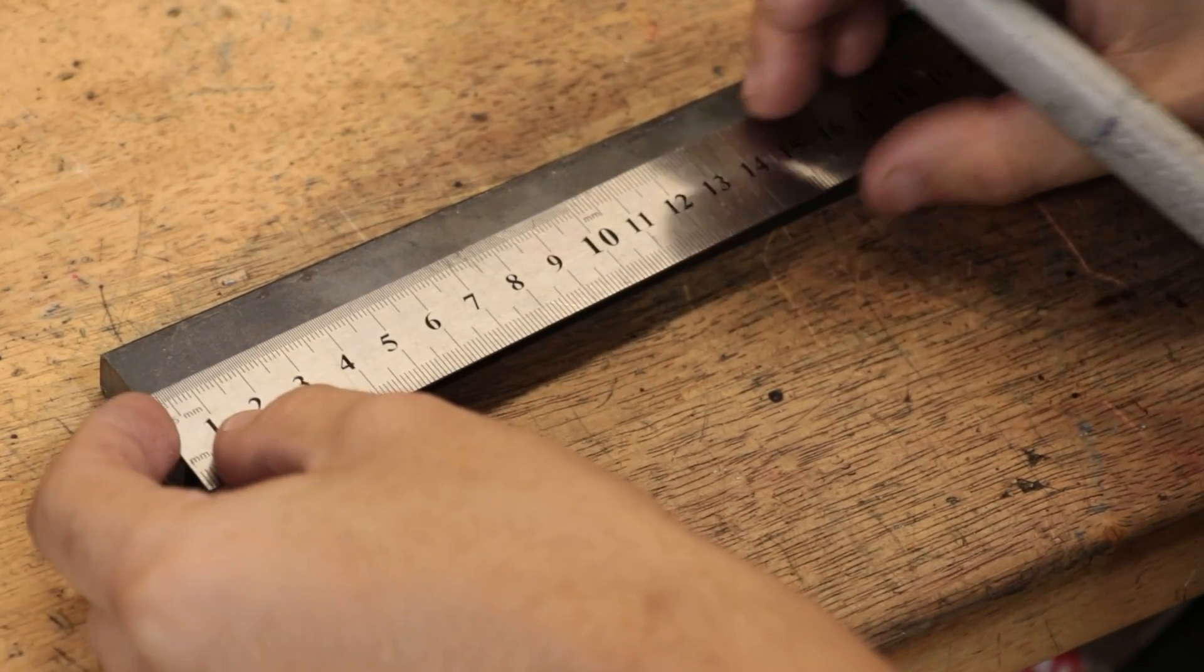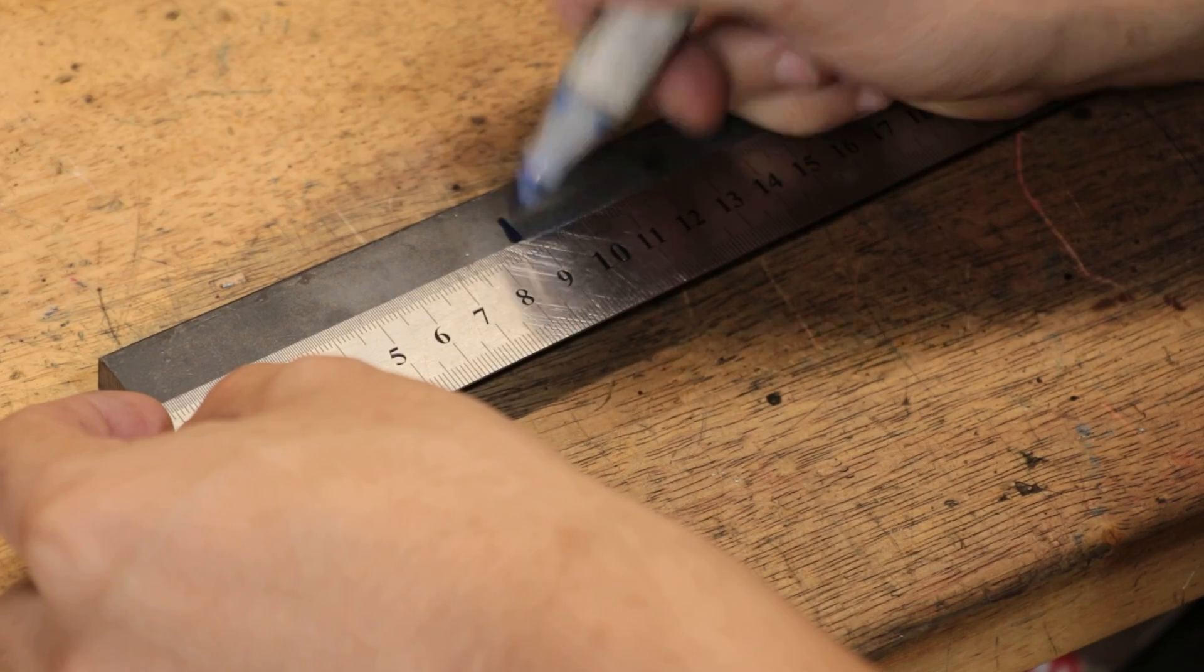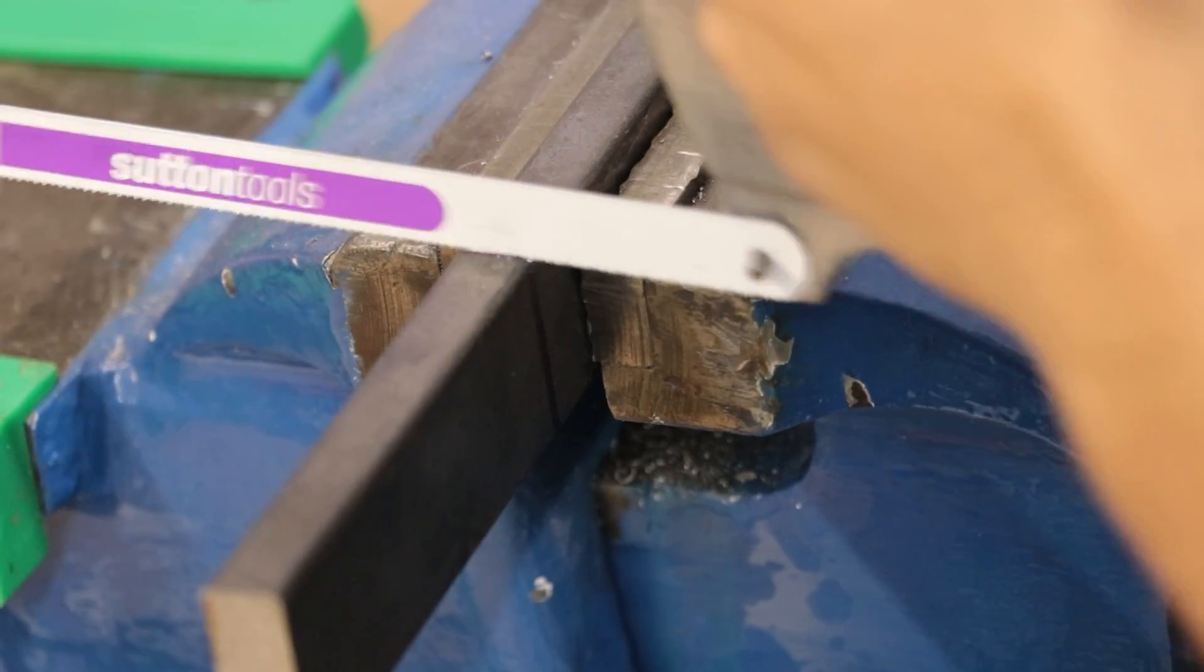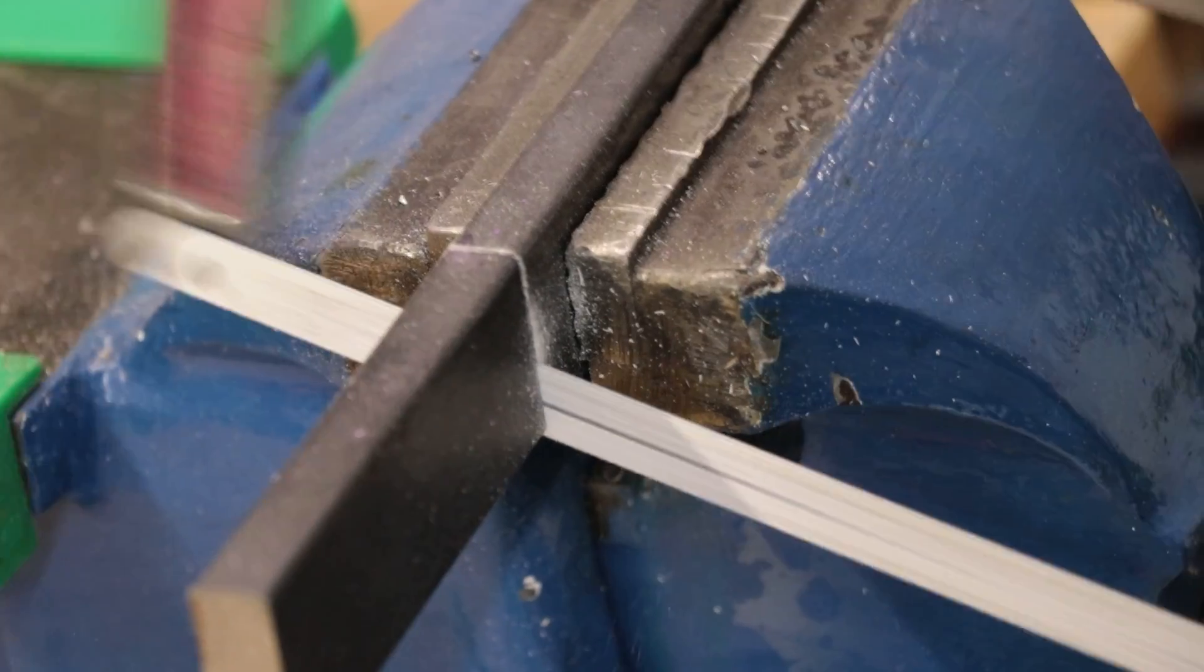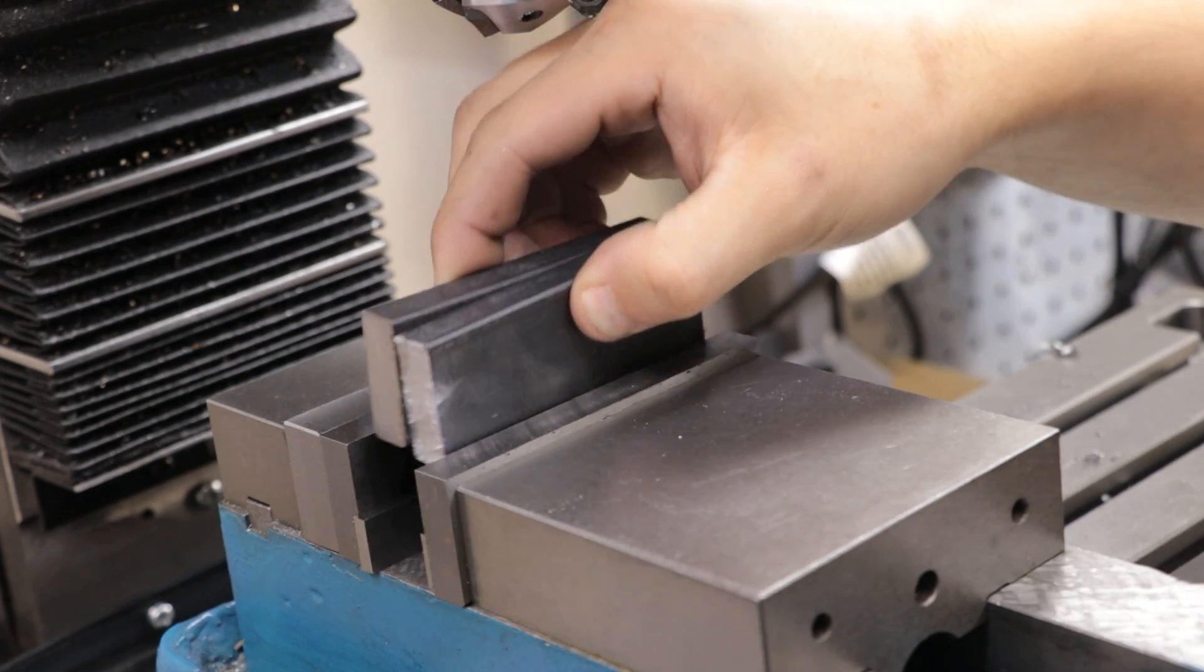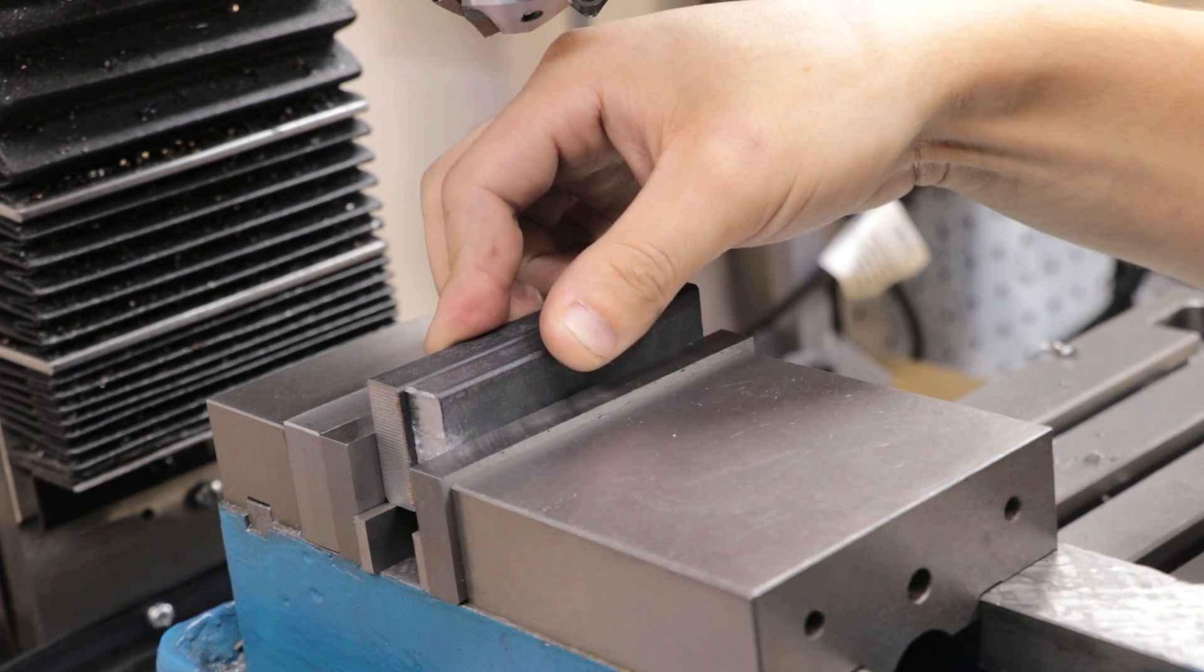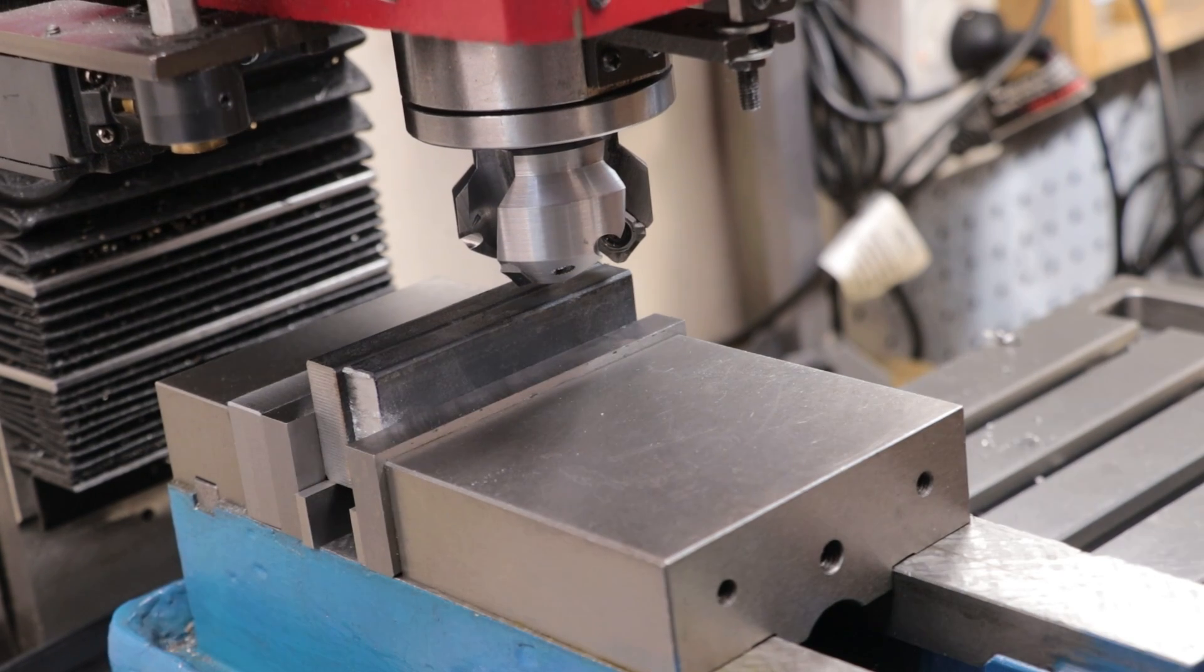Now connecting to the base will be two arms which I'll make from some mild steel. Now the 32mm stock that I'm using is a little bit big for the job so what I'll do is I'll use the face mill to take about 10mm off the side.